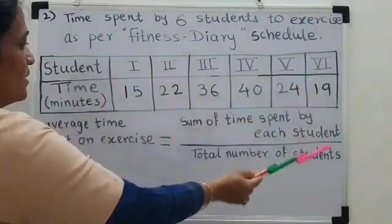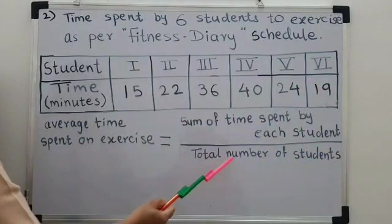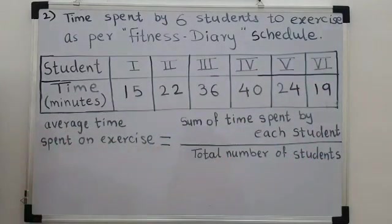See, here are 6 students. 1, 2, 3, 4, 5, 6. So, my total number of students in this particular case are 6. Let us solve this example.